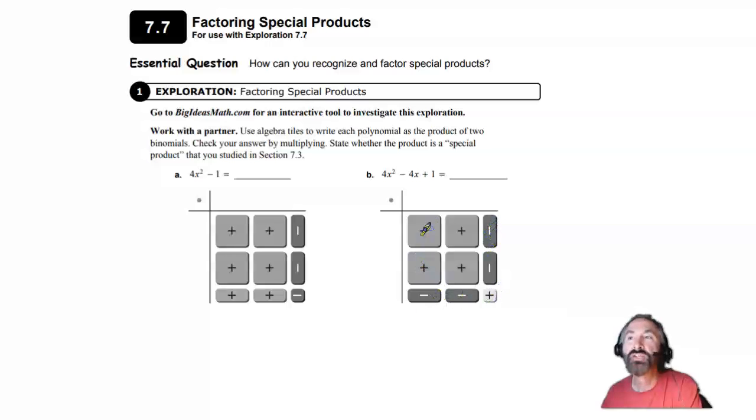This one has 4x squared. It has minus 4x and it has plus 1. So this has everything. This is just one strange case where you'll have to, and you will have problems like this, where you have to figure out the missing pieces.